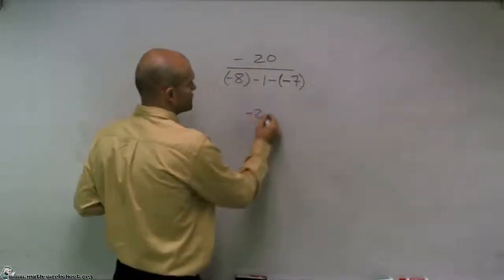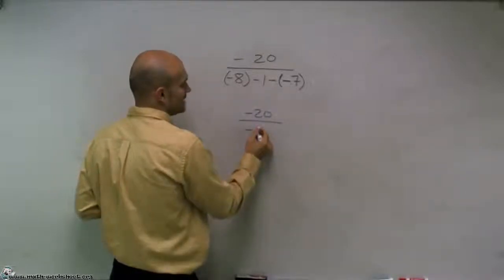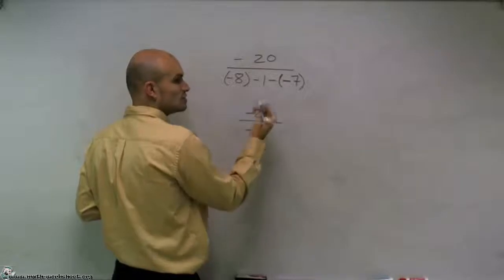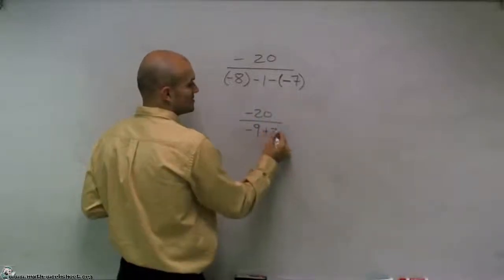So I have negative 20 all over negative 8 minus negative 1 is a negative 9. And then I have minus a negative 7. So minus a negative 7 is actually going to be a positive 7.